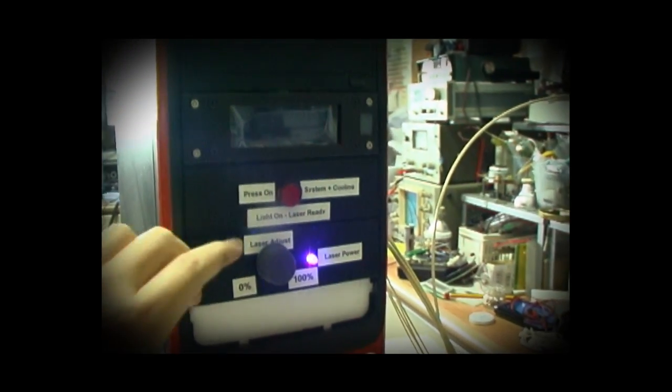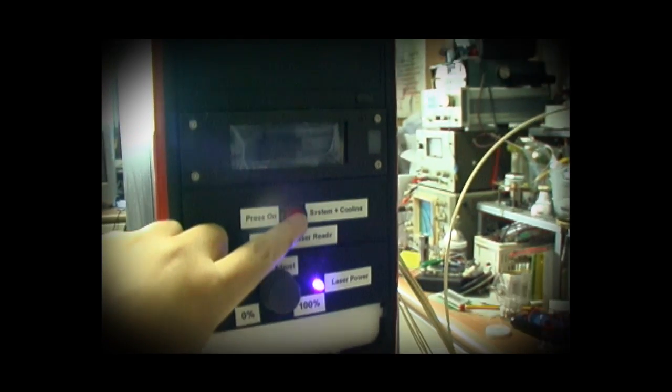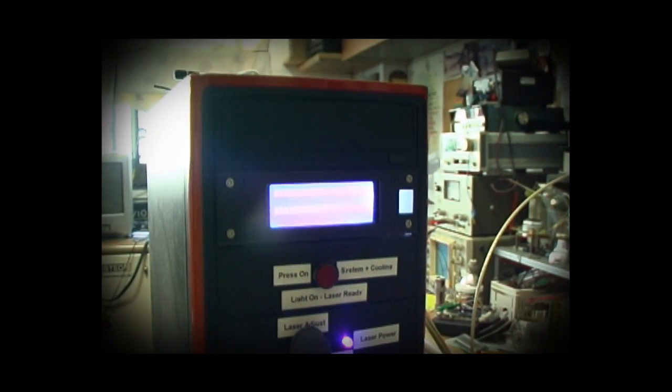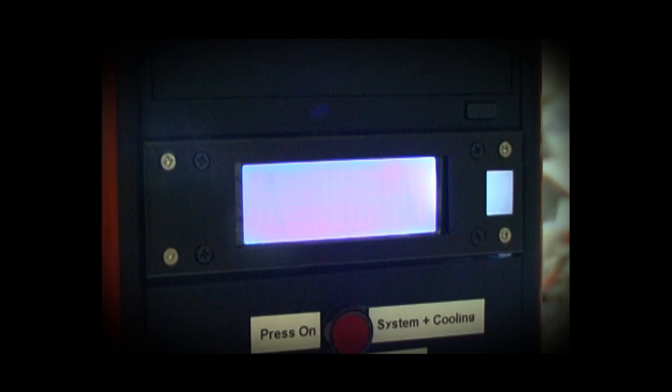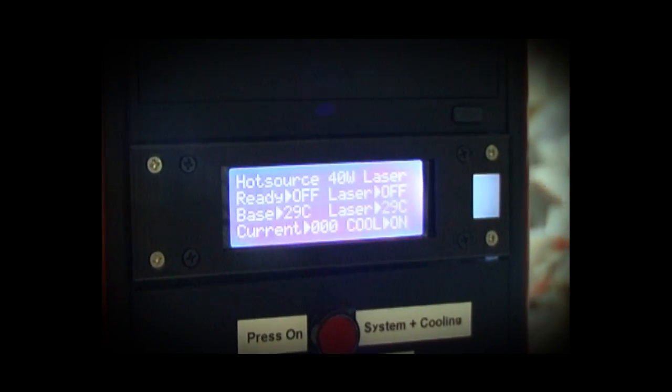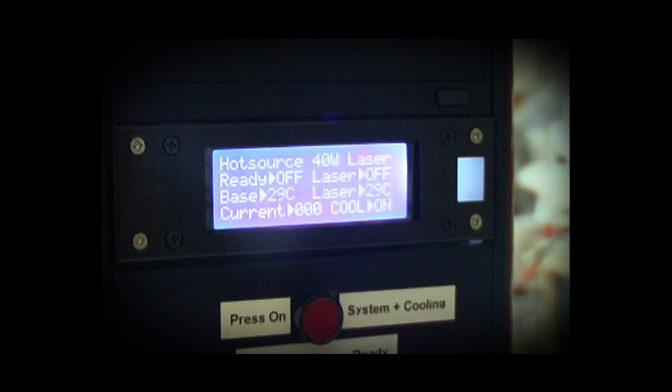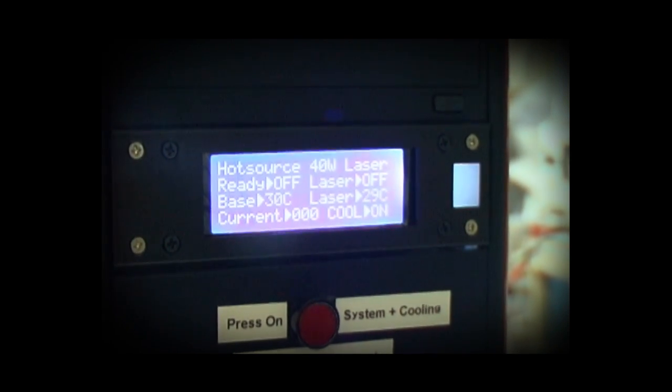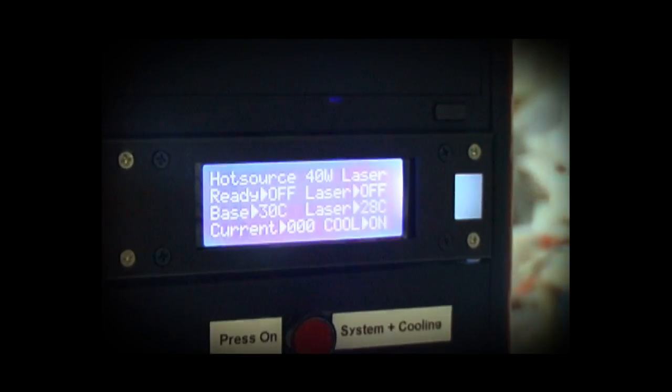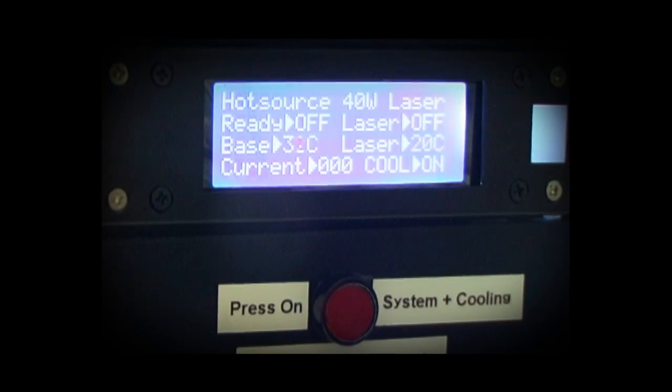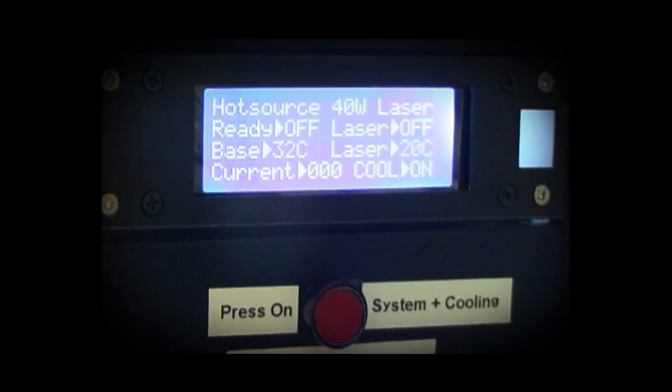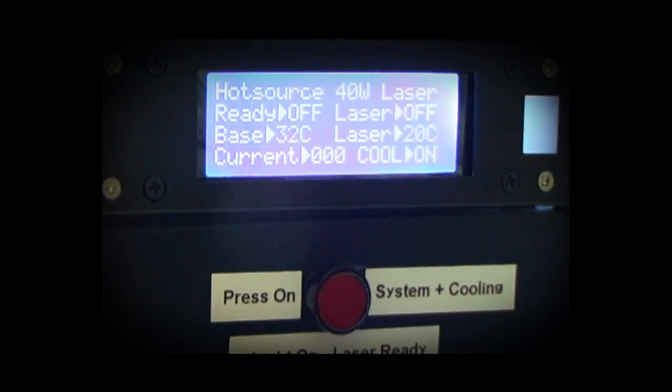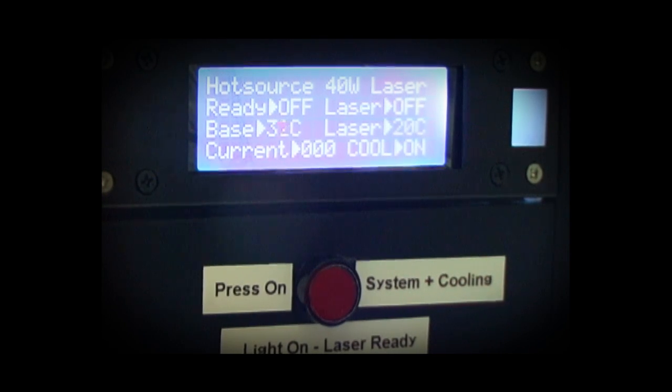The first thing we're going to do is turn on the cooling system. You will see a rough boot up screen. Basically right now, it's trying to cool the laser. It's at 29 degrees Celsius right now, 28 degrees Celsius. When it gets below 20 degrees, the laser ready light will be switched on automatically.